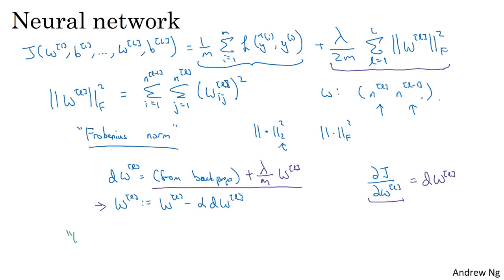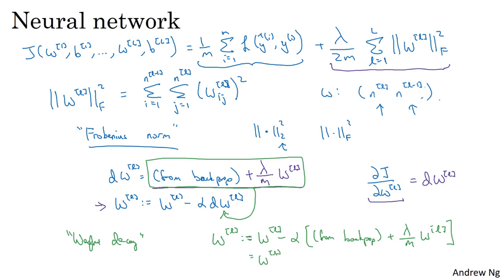And it's for this reason that L2 regularization is sometimes also called weight decay. So if I take this definition of dW^[l] and just plug it in here, then you see that the update is W^[l] gets updated as W^[l] minus the learning rate alpha times the thing from backprop plus lambda over m times W^[l]. So this is equal to W^[l] minus alpha lambda over m times W^[l] minus alpha times the thing you got from backprop. And so this term shows that whatever the matrix W^[l] is, you're going to make it a little bit smaller. This is actually as if you're taking the matrix W and you're multiplying it by 1 minus alpha lambda over m.